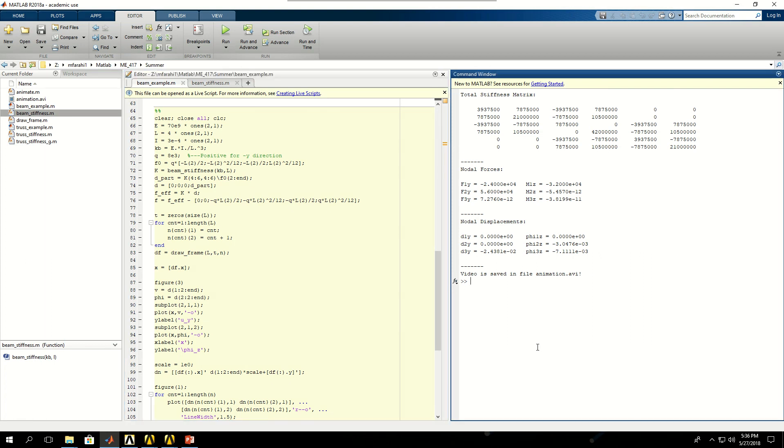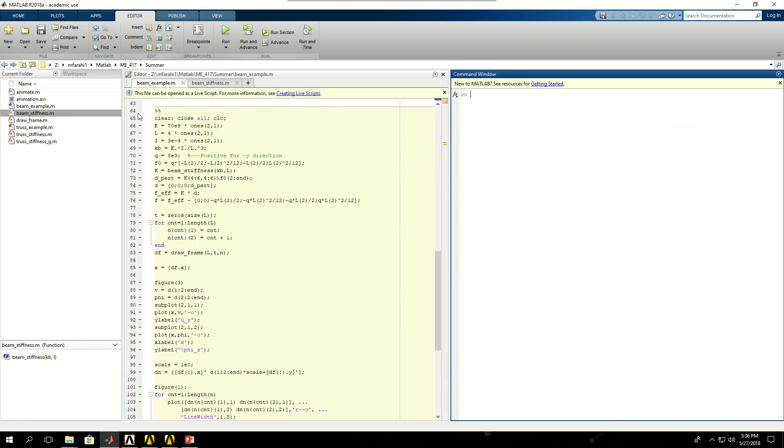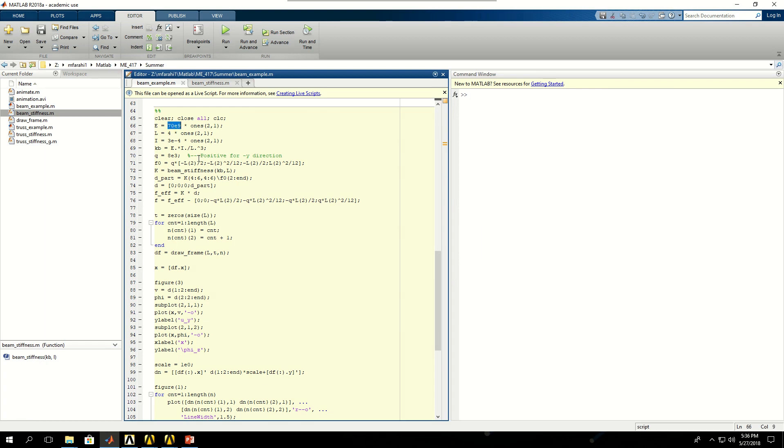This is the MATLAB code. I have defined E to be 70 gigapascals for two elements, which gives me a 2 by 1 vector of ones times 70 gigapascals. L is 4 for two elements. I is 3 times 10 to the minus 4. Then I'm calculating EI over L cubed. Q is 8 kilonewtons per meter. So I can find the equivalent nodal force for such a constant distributed load applied to my beam.